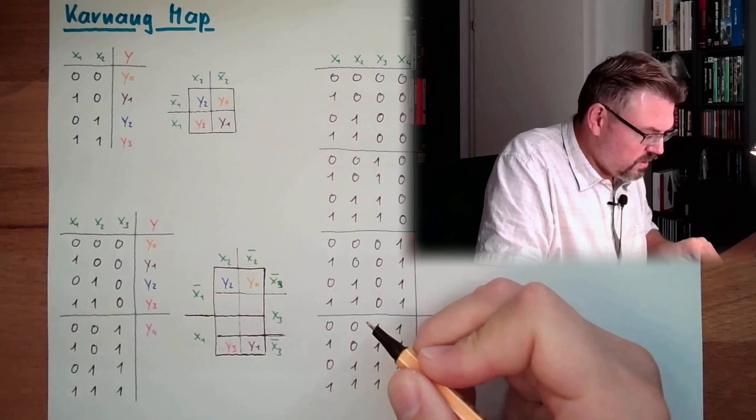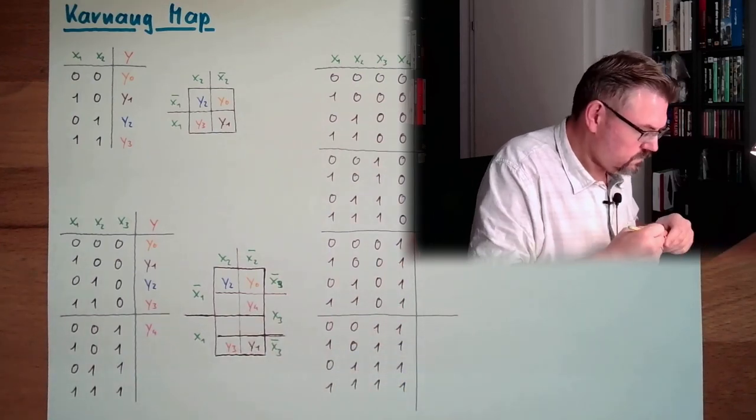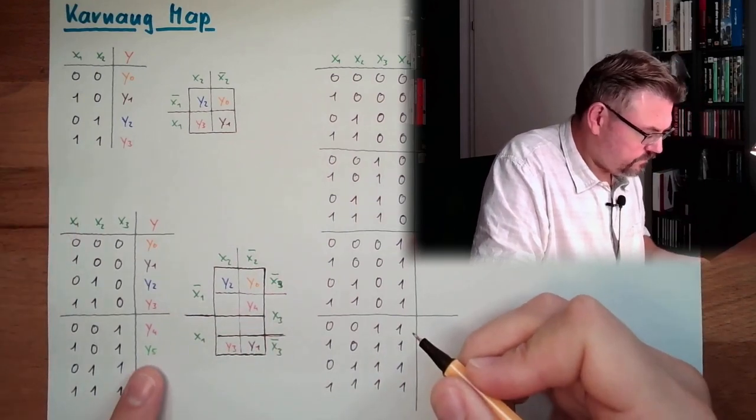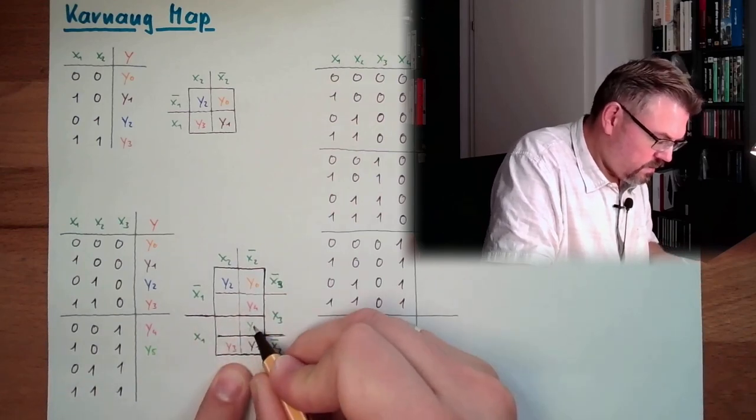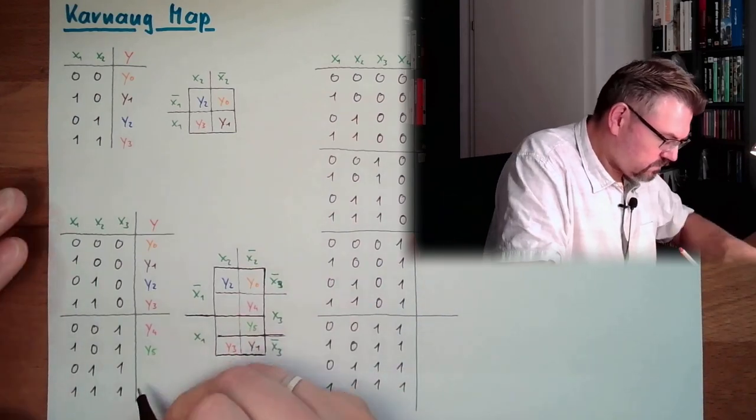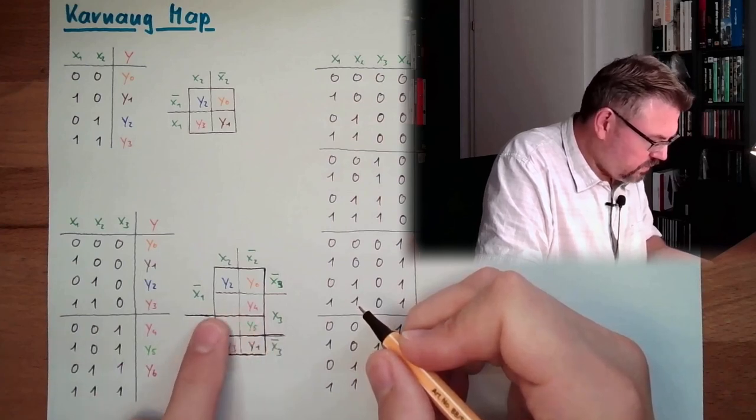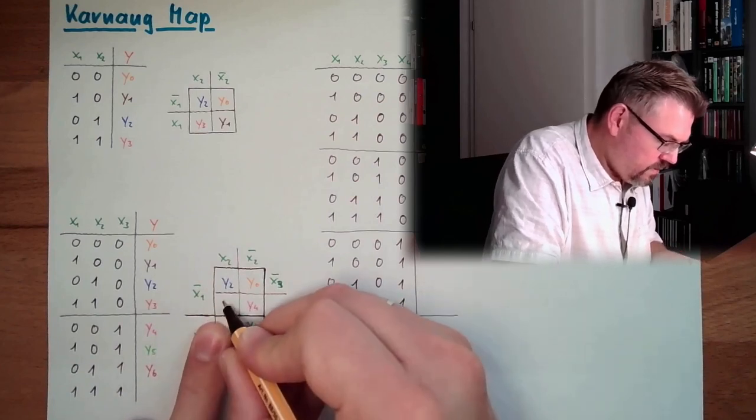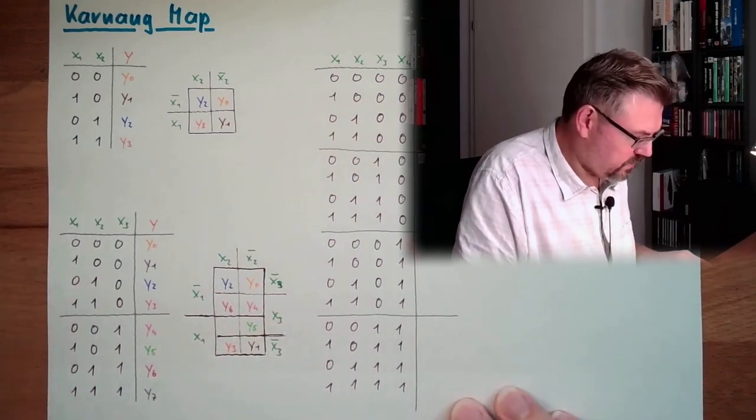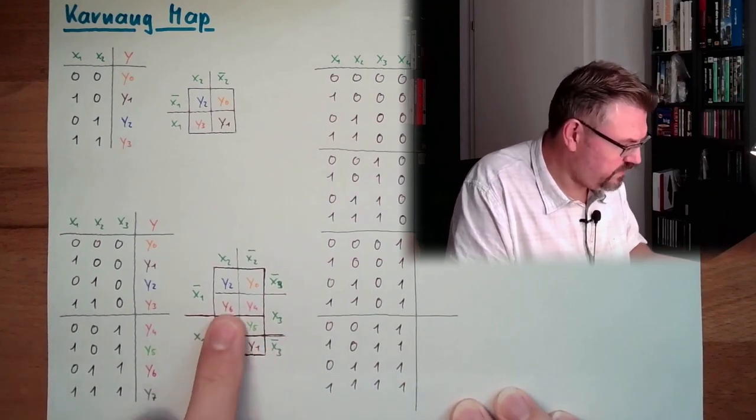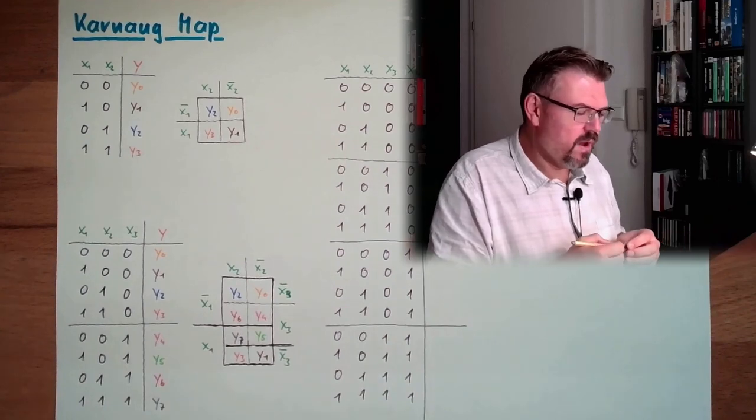y4, not x1, not x2, and x3. y5, x1, not x2, and x3. You see, it's filling up. It's simply filling up. Not x1, x2, and x3. And then we have, last but not least, x1, x2, x3, yes, y7. This is a Karnaugh map with three inputs.